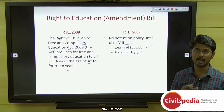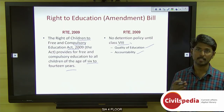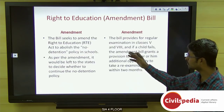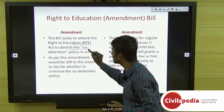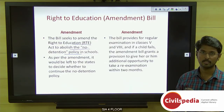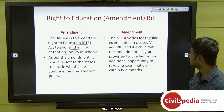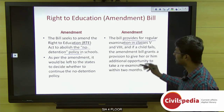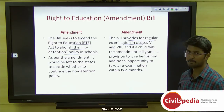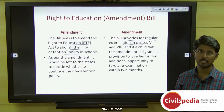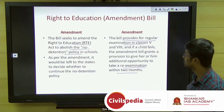Majority of states wanted to amend the no-detention policy by abolishing it. This amendment bill seeks to abolish the detention policy in schools, leaving the decision to individual states. The bill also provides for regular examinations in Classes 5 and 8. If a child fails, the school will provide two months of additional training, followed by a re-examination within two months.